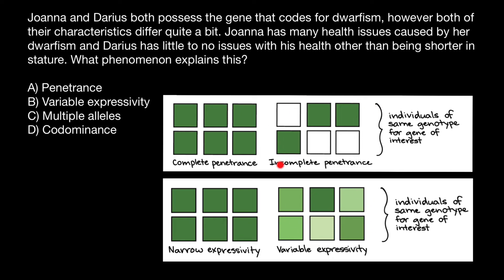One more time: incomplete penetrance would be a situation when a group of people has a defective allele, but some of them would be phenotypically normal. Those individuals can pass this defective allele to their progeny, and in their progeny this genetic disorder may reappear. But variable expressivity would be when every person in a group who has the defective allele expresses this genetic disorder, but to a different extent.